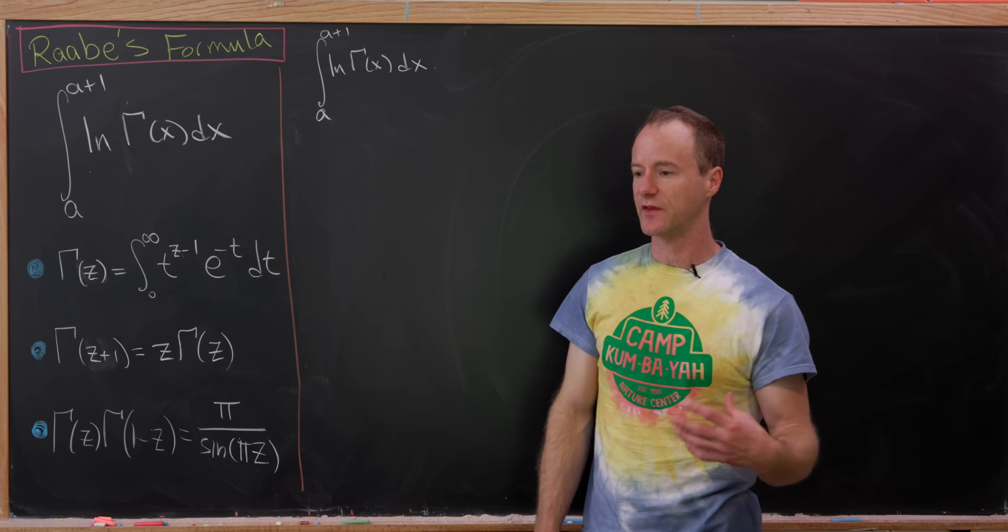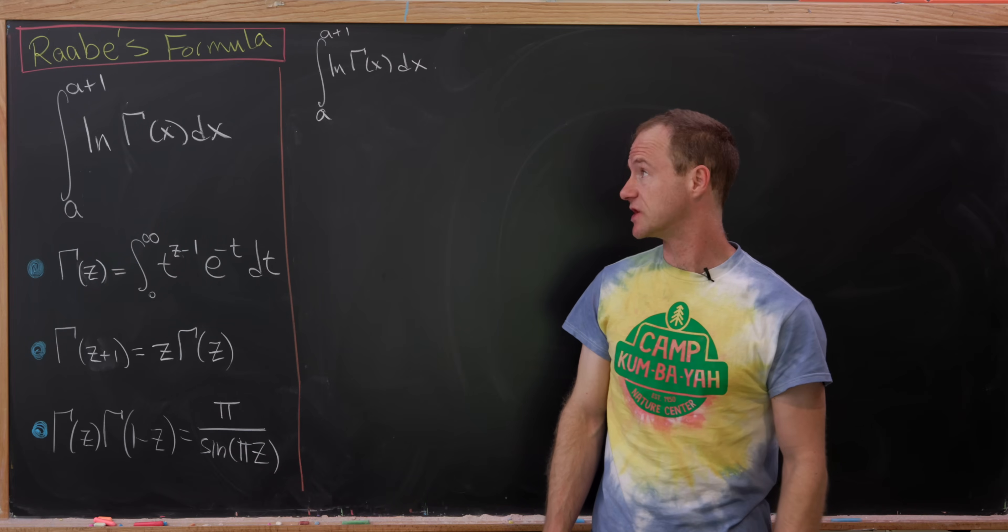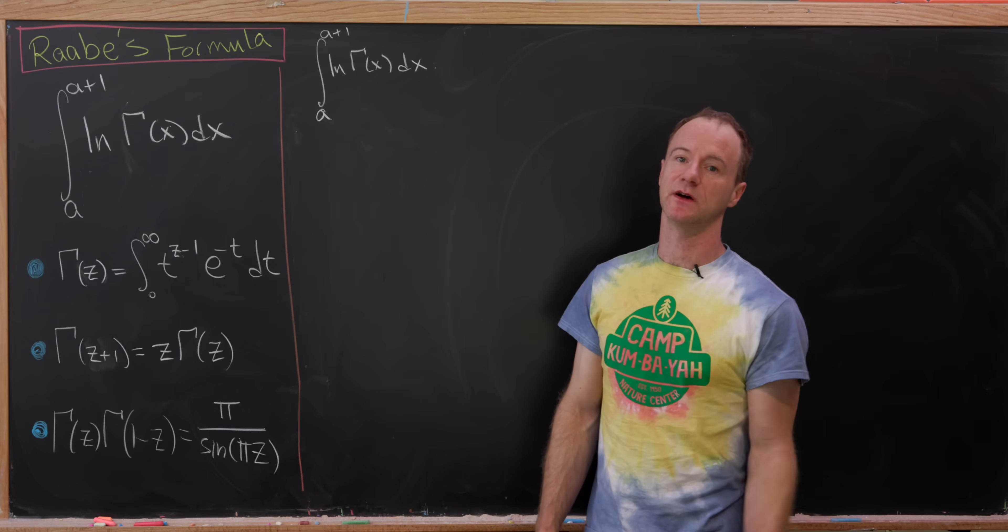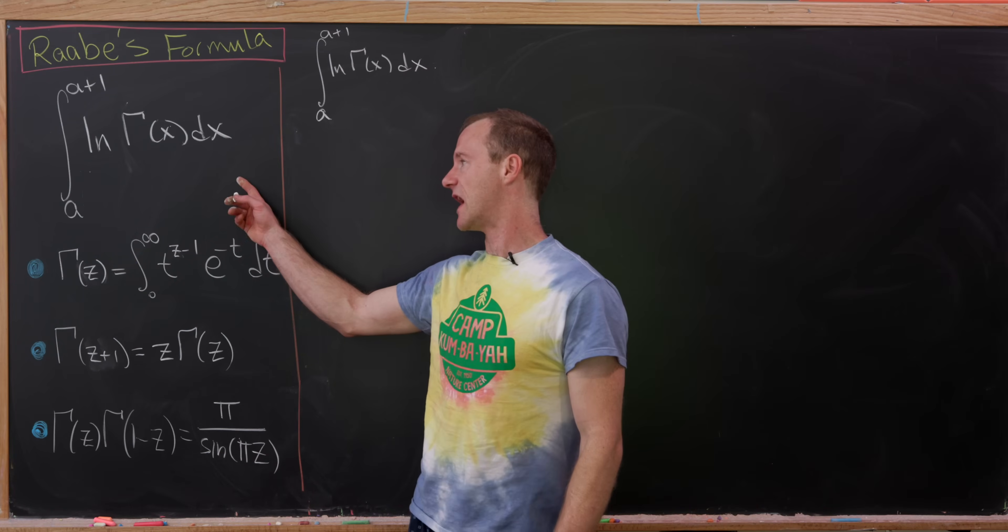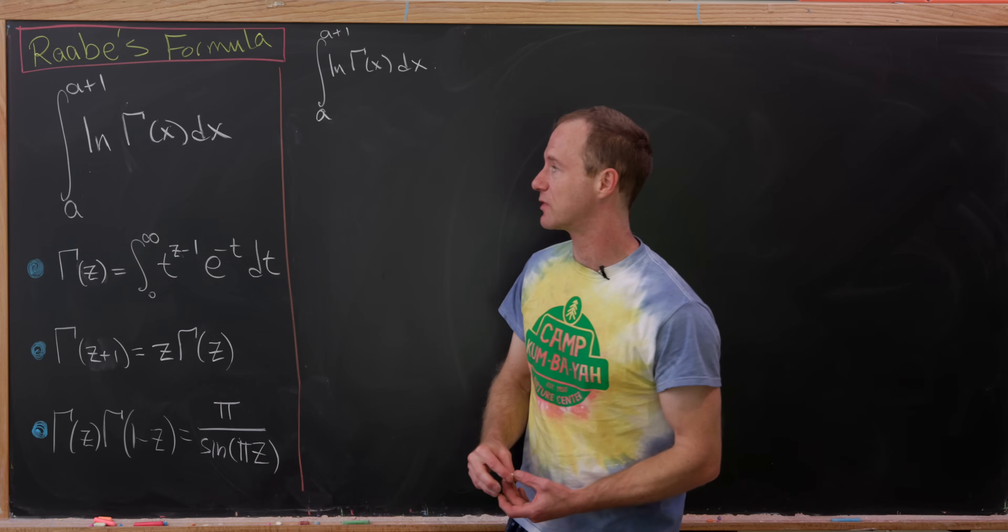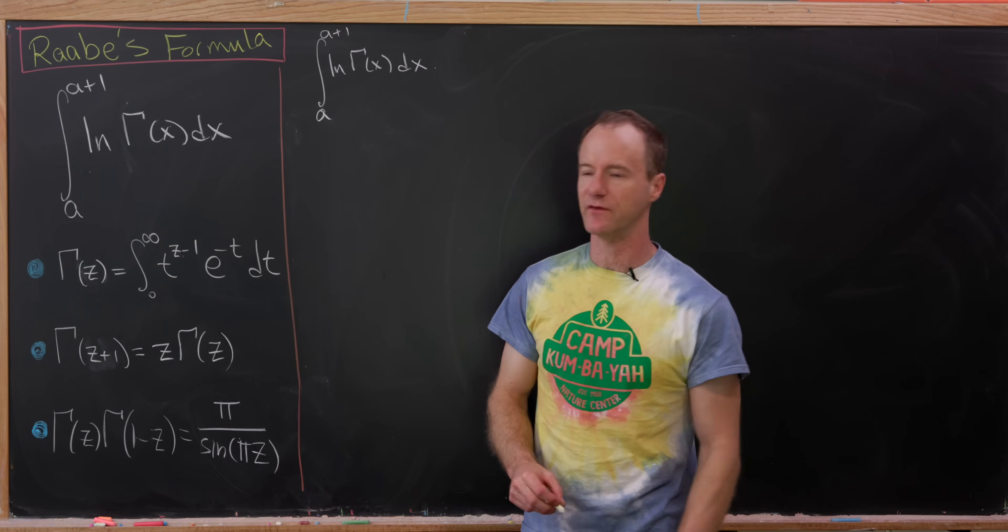Today we're going to look at a very nice integral involving the log of the gamma function. This is called Raabe's formula. In particular, we'll evaluate the integral from a to a plus 1 of the log of gamma of x dx.